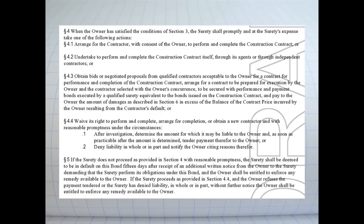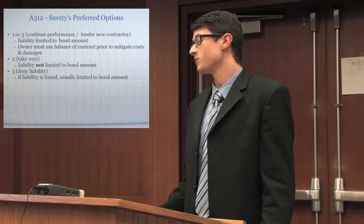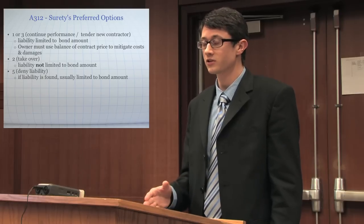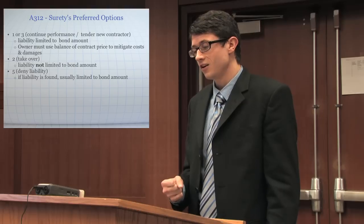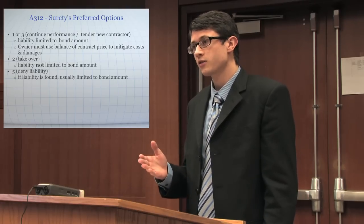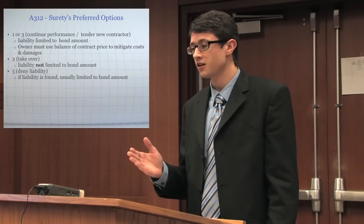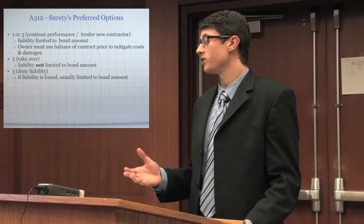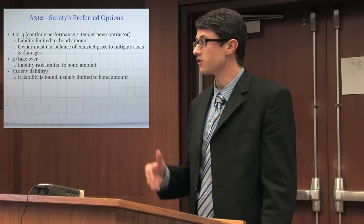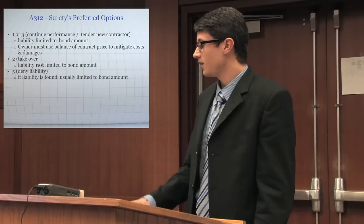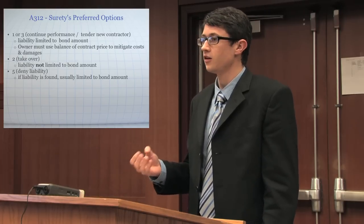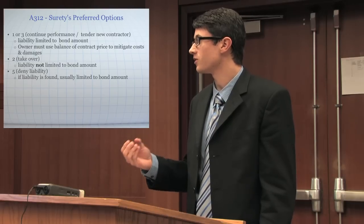Some options are simply better than others. The first or third option — getting the original contractor to complete performance or tendering a new contractor — may be best because the surety's liability will be limited to the bond amount, and the owner will be under an obligation to use the balance on the contract price to mitigate costs and damages. The second option, taking over the contract itself, is not as good because the surety's liability won't be limited to the bond amount and it could end up paying far more than it bargained for. Even if the surety denies liability, the amount it will ultimately be liable for is typically still limited to the bond amount.